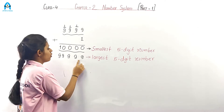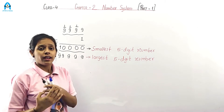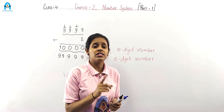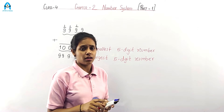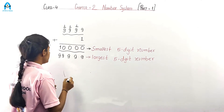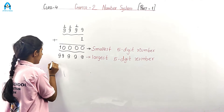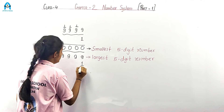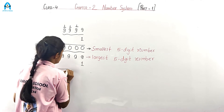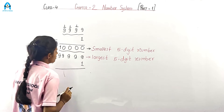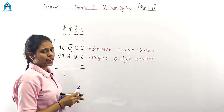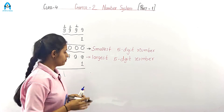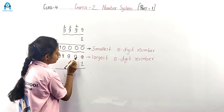Now from this, let's find out the smallest 6-digit number. Let's add 1 to the largest 5-digit number to get the smallest 6-digit number.